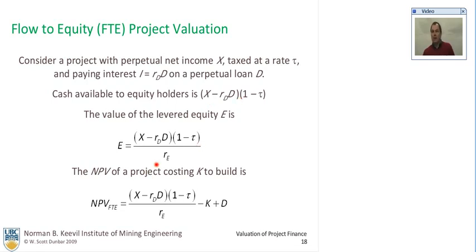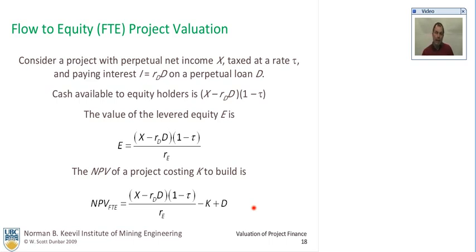The value of the levered equity is given by this equation here. The net present value of a project costing K to build is shown here. K minus D is the amount that the equity holders actually pay out of their pockets to the project; the lenders contribute D, K is the total capital cost, and in the end there'll be this amount of cash available for the equity holders.